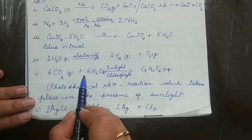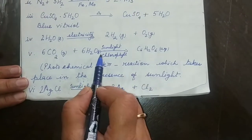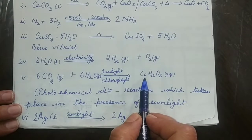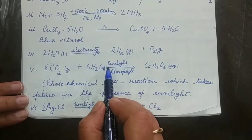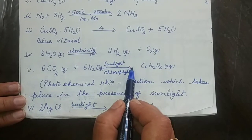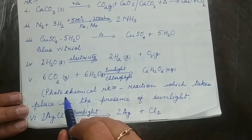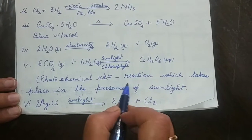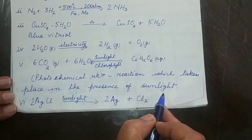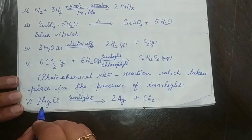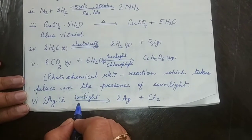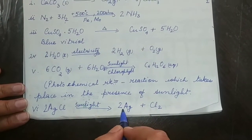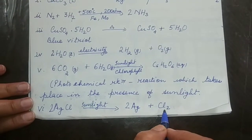Similarly, 6 molecules of CO₂ with 6 molecules of water in the presence of sunlight and chlorophyll gives glucose C₆H₁₂O₆. This is a reaction where sunlight is taken in — such a reaction is known as a photochemical reaction. A photochemical reaction is one where the reaction takes place in the presence of sunlight. Another photochemical reaction: decomposition of silver chloride (AgCl) in the presence of sunlight forms grey silver metal and chlorine — this is photochemical decomposition.